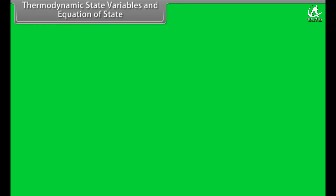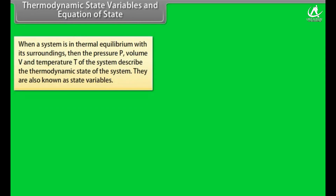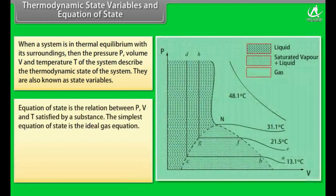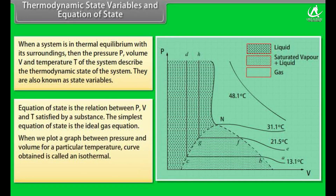Thermodynamic state variables and equation of state: when a system is in thermal equilibrium, pressure P, volume V, and temperature T describe the thermodynamic state and are called state variables. The equation of state is the relation between P, V, and T. The simplest equation of state is the ideal gas equation. When pressure is plotted against volume for a particular temperature, the curve obtained is called an isothermal. A plot of different isothermals for CO₂ is shown in the graph.